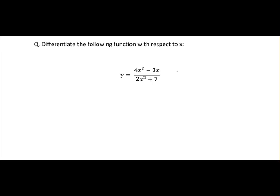So first we identify u and v, so it's always u over v. u will be the top line or the numerator and v will be the bottom line or the denominator. So we know u is equal to 4x cubed minus 3x and v is equal to 2x squared plus 7.